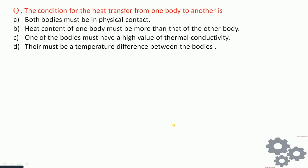The condition for heat transfer from one body to another: both bodies must be in physical contact; heat content of one body must be more than the other; one body must have high thermal conductivity; or there must be a temperature difference between the two bodies. The very first condition for heat transfer to take place is a temperature difference — without it, no heat transfer occurs. So the last option, temperature difference, is the correct answer.